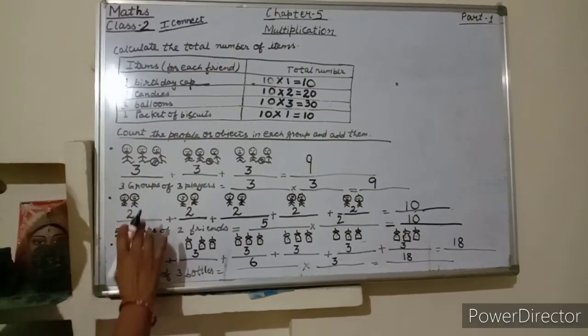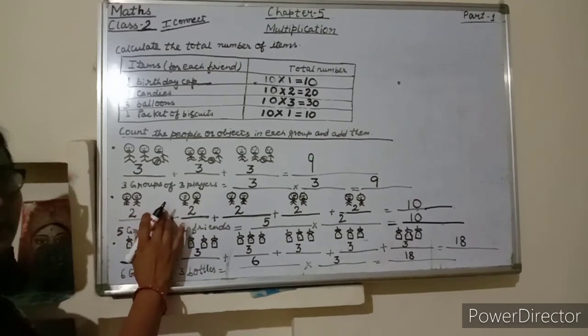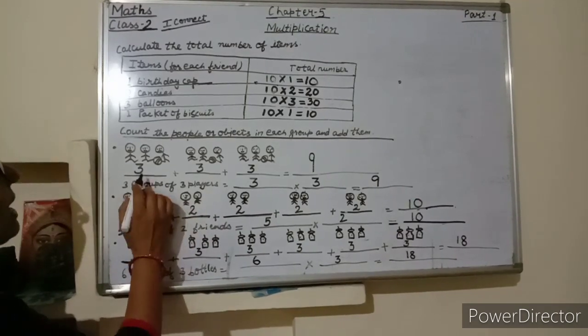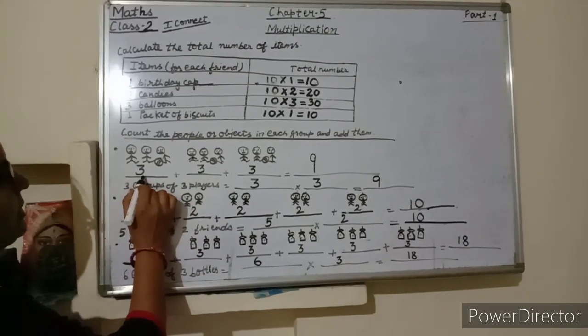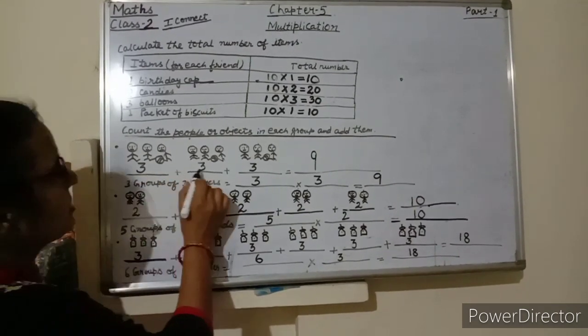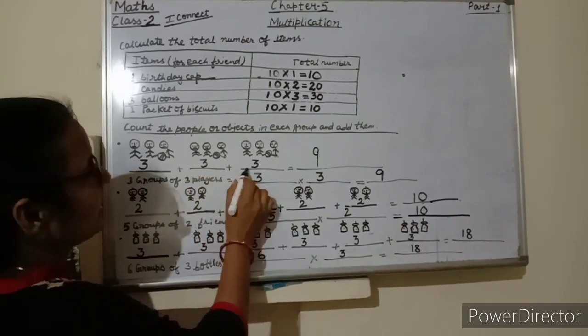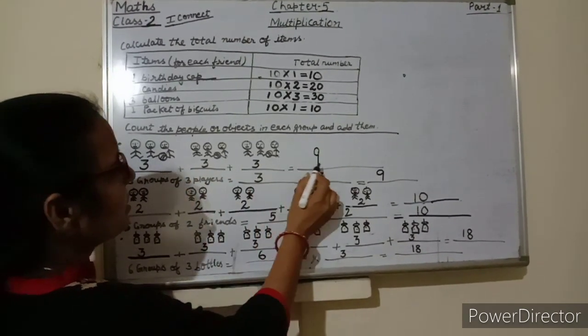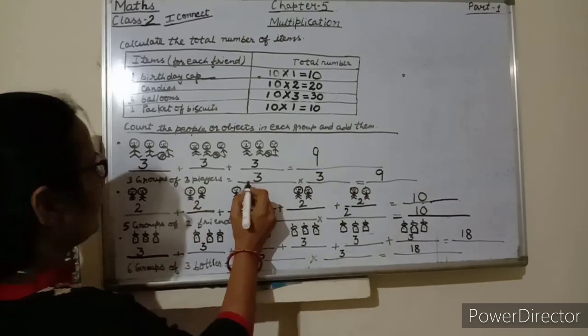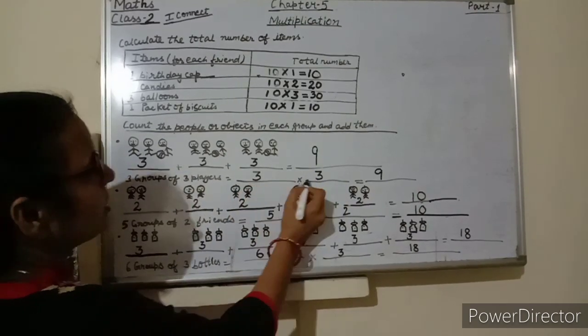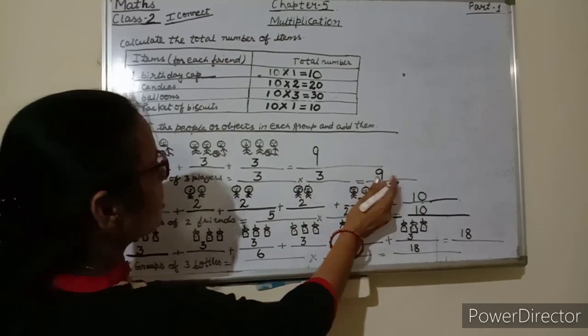So students, multiplication is repeated addition. 3 plus 3 plus 3 is equals to 9, and here 3 into 3 is equals to 9.